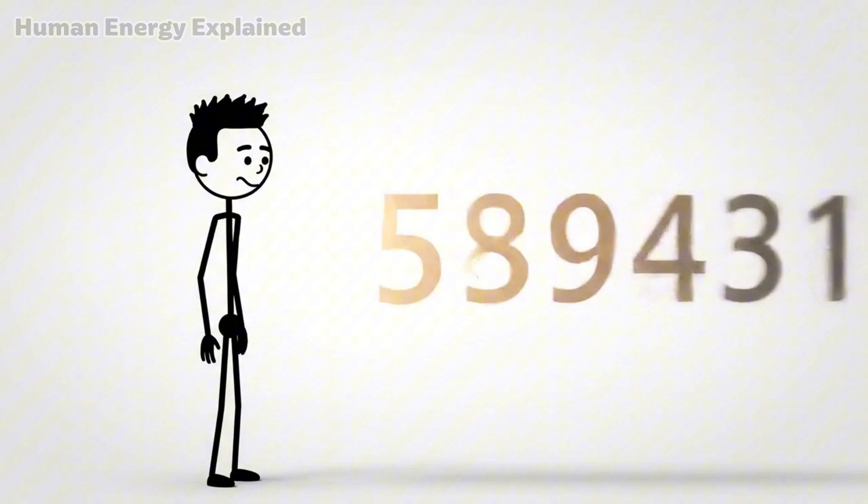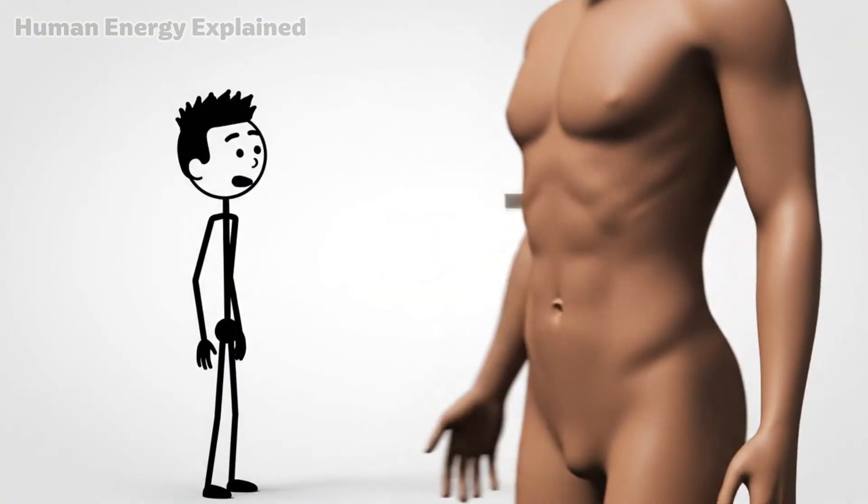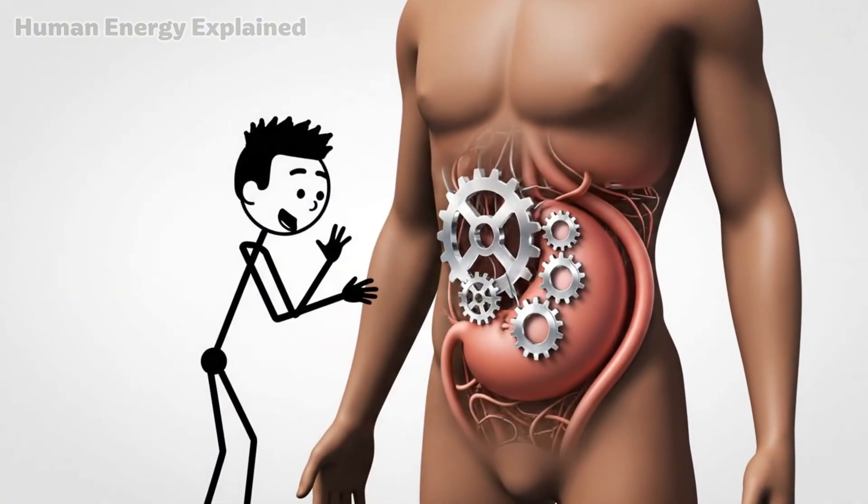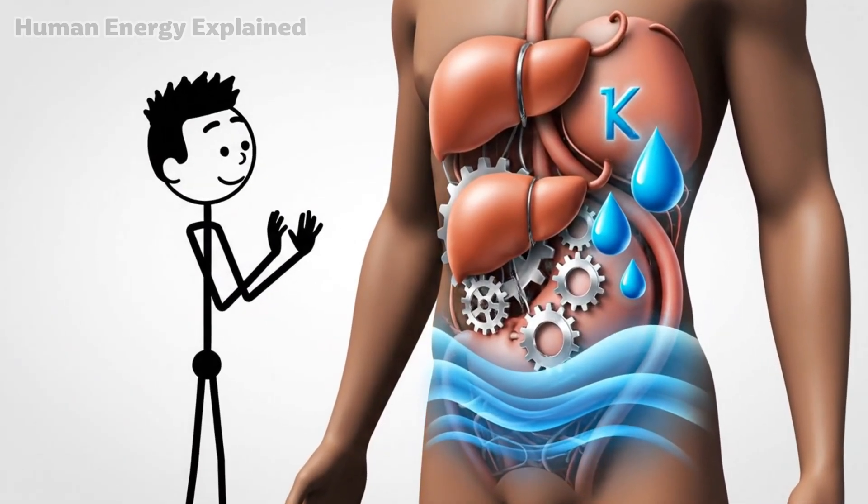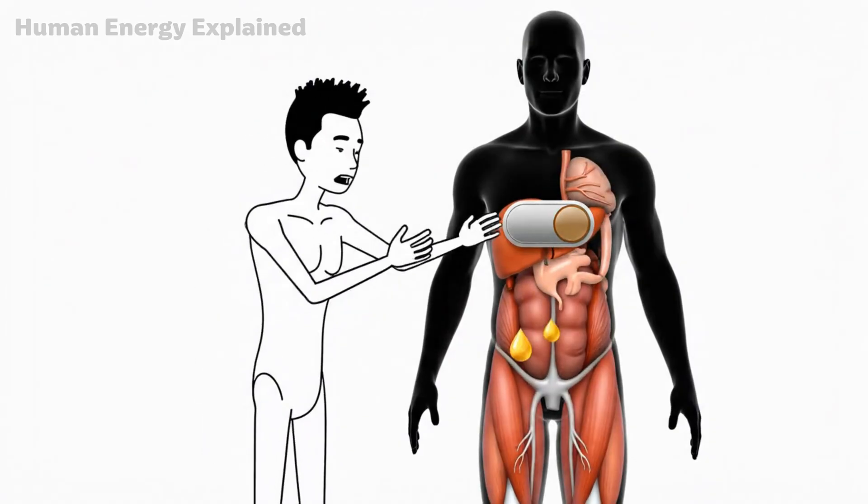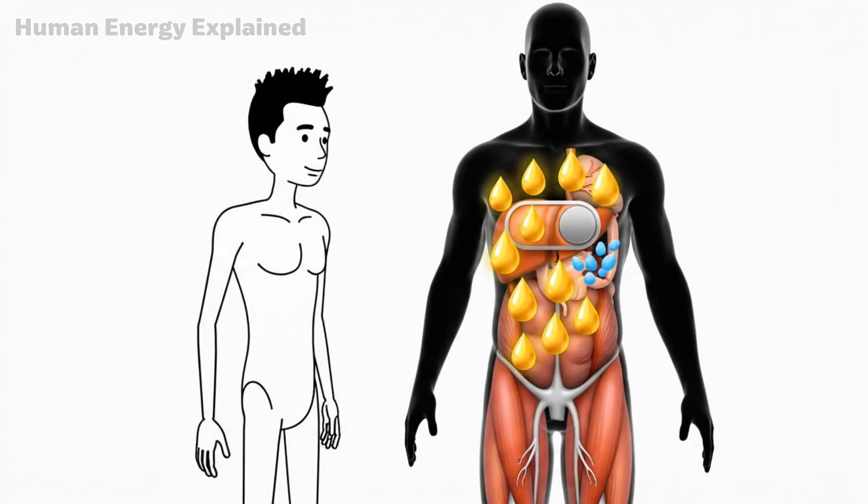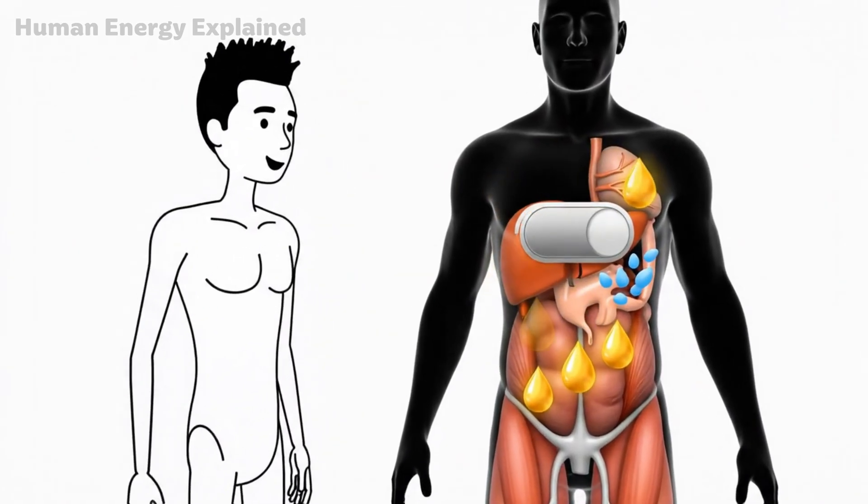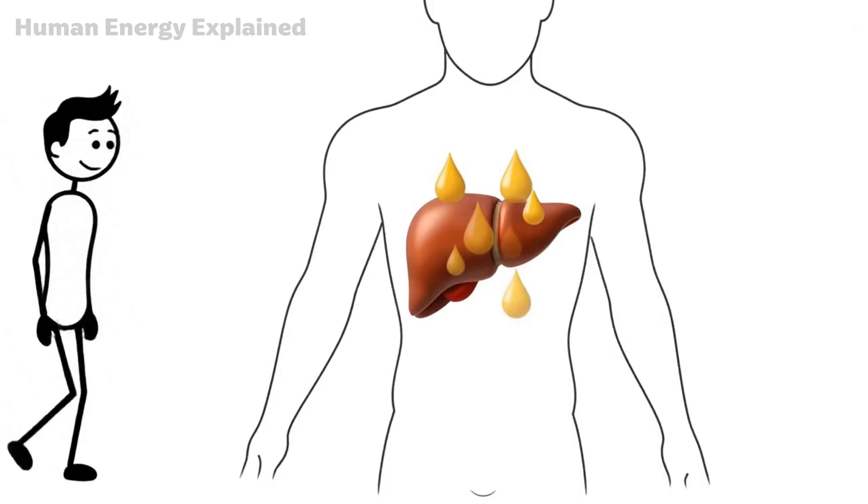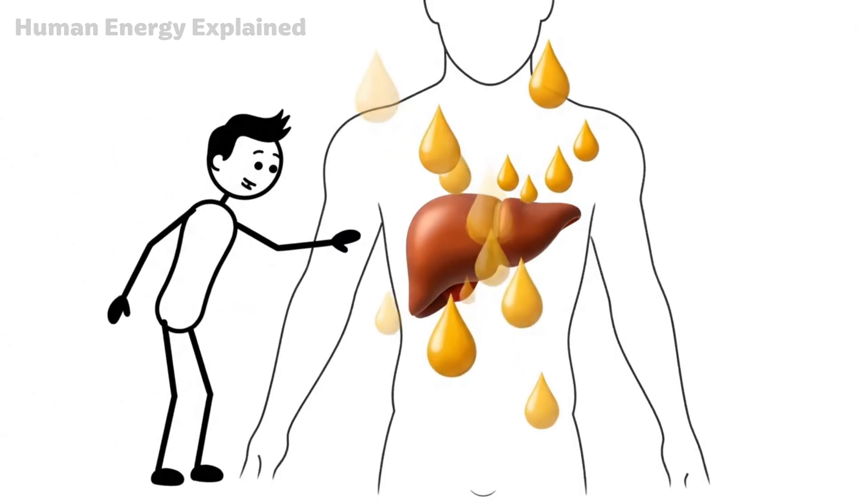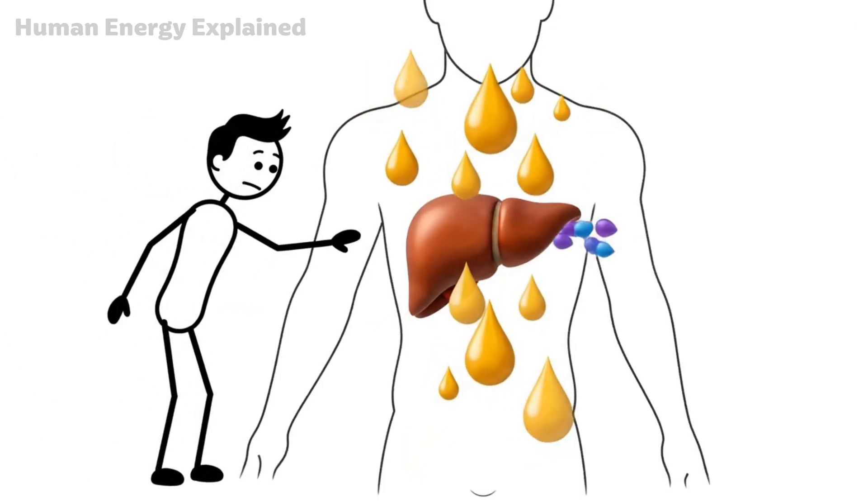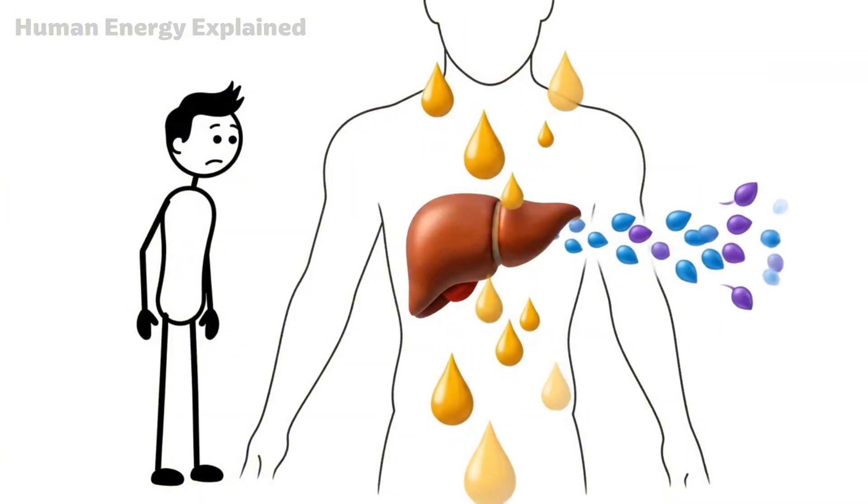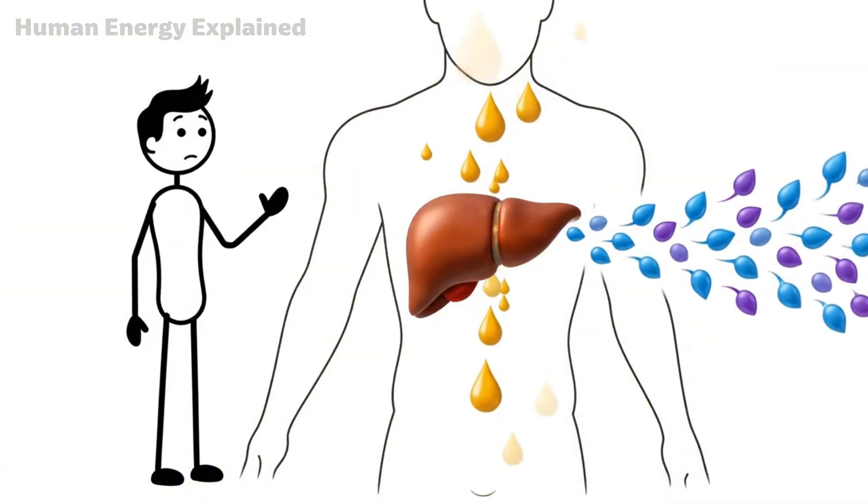And that's exactly what happens next. Somewhere between day four and day seven, something remarkable occurs. Your body flips a switch. The glycogen is gone. Insulin stays low. And your liver begins doing something it rarely gets the chance to do in our modern eating world, it starts converting stored fat into molecules called ketones.